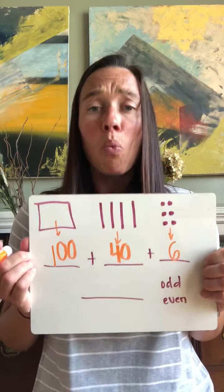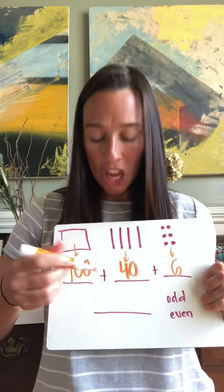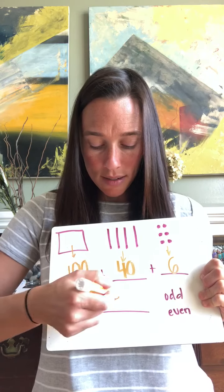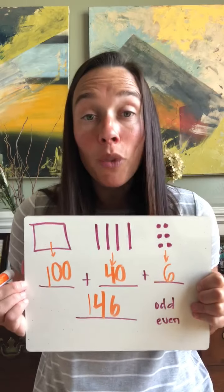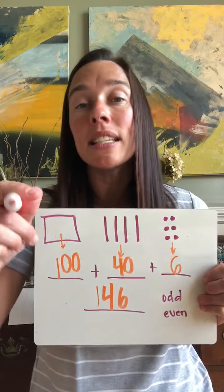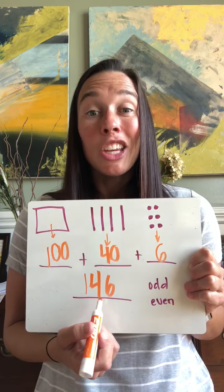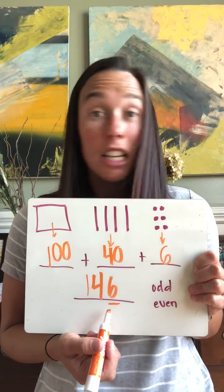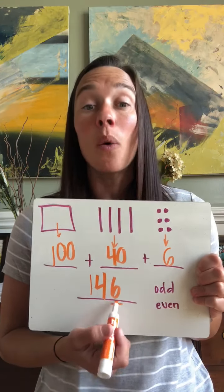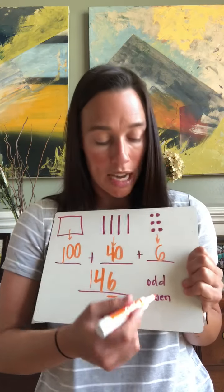Very good. Now tell somebody: is 146 odd or even, and then tell them how you know. You should tell them that it's even, and you know because you look in the ones place. It doesn't matter what number you have — you always look in the ones place to find out if your number is odd or even. It is an even number.